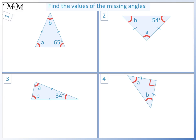Question 1. These two angles are the same size, therefore a is 65 degrees. Next we'll find b. 65 plus 65 equals 130. 180 take away 130 equals 50, so b is 50 degrees.